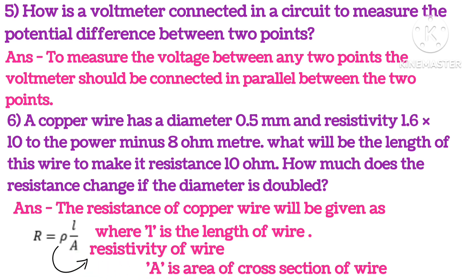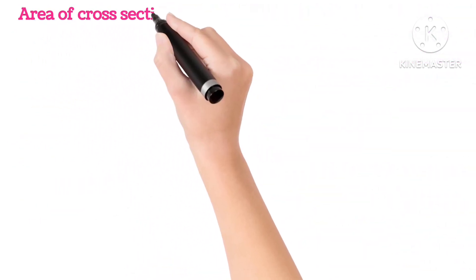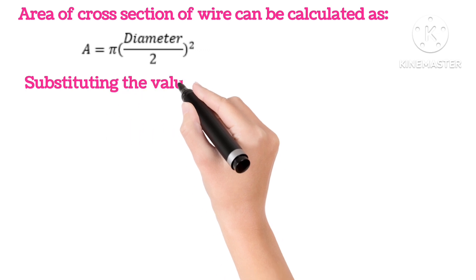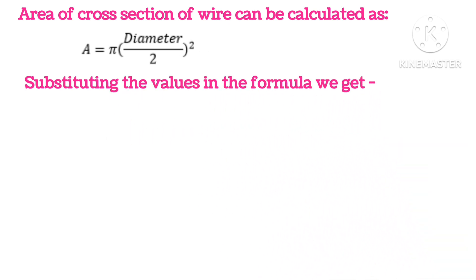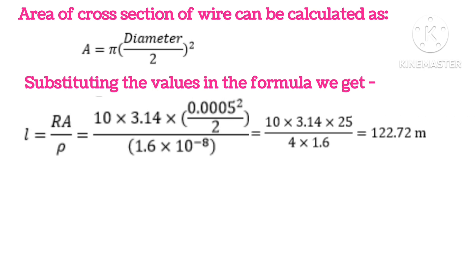And rho is the resistivity of the wire. Area of cross section of the wire can be calculated as A equals pi R squared. So R is diameter upon 2. Substituting the values, we get L equals R A upon rho, so length will be 122.72 meters.